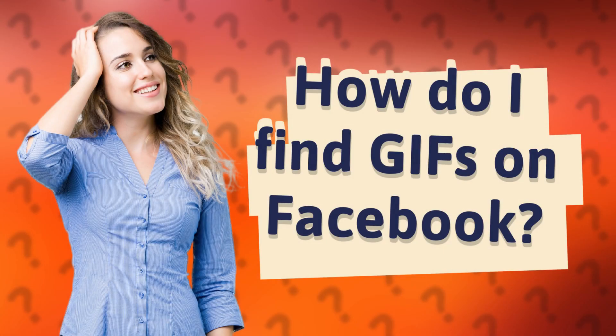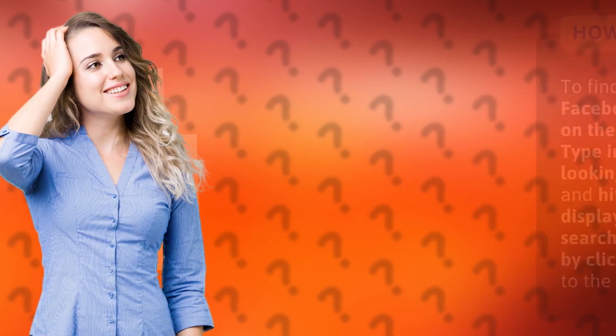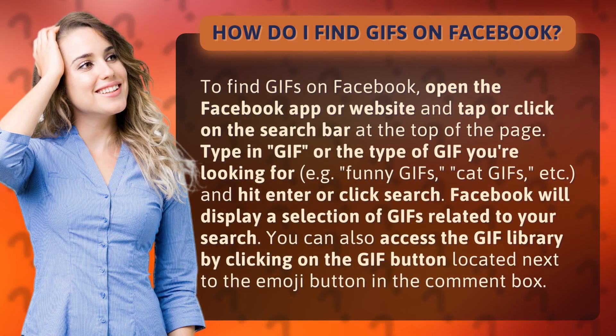How do I find GIFs on Facebook? To find GIFs on Facebook, open the Facebook app or website and tap or click on the search bar at the top of the page. Type in 'GIF' or the type of GIF you're looking for, e.g., funny GIFs, cat GIFs, etc., and hit enter or click search.